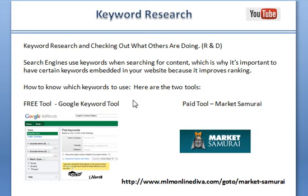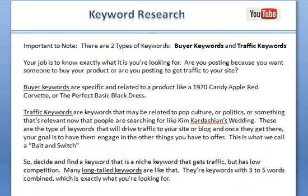Here are two great keyword tools you can use — one is free and one is paid. The first tool is the Google Keyword Tool; just go to Google, search 'keyword tool,' and you'll be able to do research on your keywords. The other tool is Market Samurai. Don't worry about remembering these tools because they'll be included in your research section, along with links to get to these particular sites.